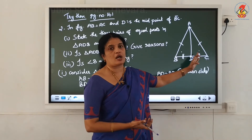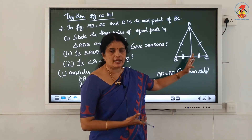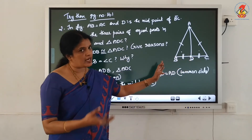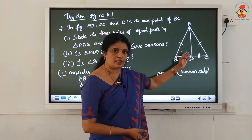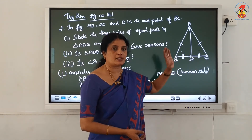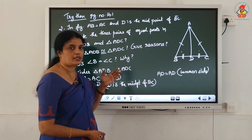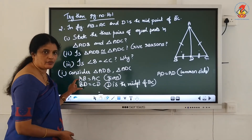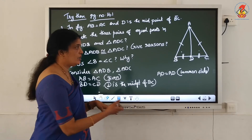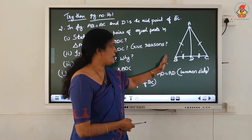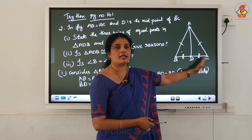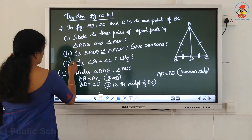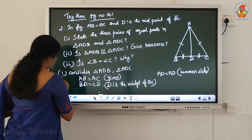By what? SSS congruence criterion. What is the SSS congruence criterion? If 3 sides of one triangle are equal to the 3 sides of another triangle, that criteria is called SSS criteria. Here, we already wrote it - 3 sides of triangle ABD equal to the 3 sides of triangle ACD - therefore these 2 triangles are congruent. Second question: is triangle ADB congruent to triangle ADC? The same thing, so write it. Reason also should be written.